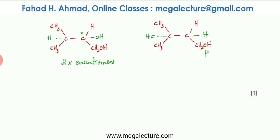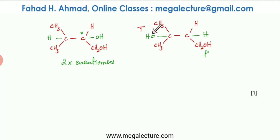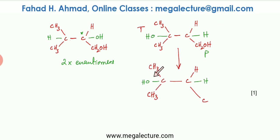I've redrawn the first molecule for oxidation. The tertiary alcohol OH is left untouched. The primary alcohol carbon is changed to a carboxylic acid — double bond O and OH. That is one oxidation product. Now doing the same with the second molecule: one OH is a primary alcohol (changes to carboxylic acid) and the other is a secondary alcohol (changes to a ketone).